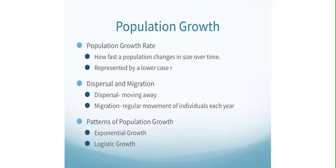The very last thing I want to talk about is patterns of population growth. The first is exponential growth — under ideal conditions, populations of species can grow exponentially, meaning they have no limitation and can just skyrocket up. As population size increases, the growth rate also increases. The larger the population becomes, the faster it grows. If you have 200 lions, there's more opportunity to reproduce, more genetic traits being passed on. However, most populations don't live under ideal conditions, so populations generally are not growing exponentially. Even if a population grows exponentially for a time, there are so many factors that limit growth — competition, land, resources, food.